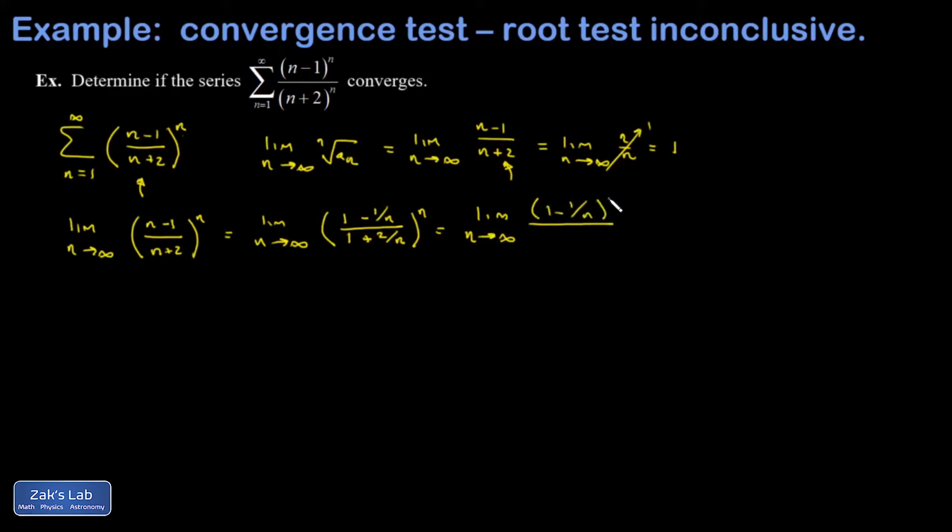This can be split up into the limit as n goes to infinity, 1 minus 1 over n to the n over 1 plus 2 over n to the n. Keep in mind that e is the limit of 1 plus 1 over n to the n. Both of these things look very similar to e. You can manipulate both limits and turn them into powers of e. The limit of a fraction is the fraction of the limits, so I'm going to look at them one at a time.